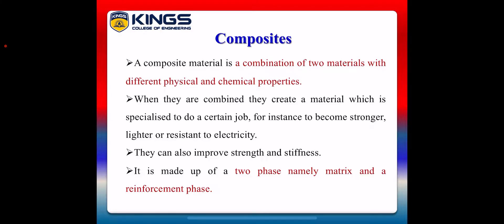Before discussing about types of composites, we have to know about what composites are. The composite is a new material which is a combination of two materials with different physical and chemical properties. When they are combined, they create a new material which is specialized to do a certain job — for instance, to become stronger, lighter, or resistant to electricity. They can also improve the strength and stiffness of the materials. It is mainly made up of two important phases: matrix phase and reinforcement phase.